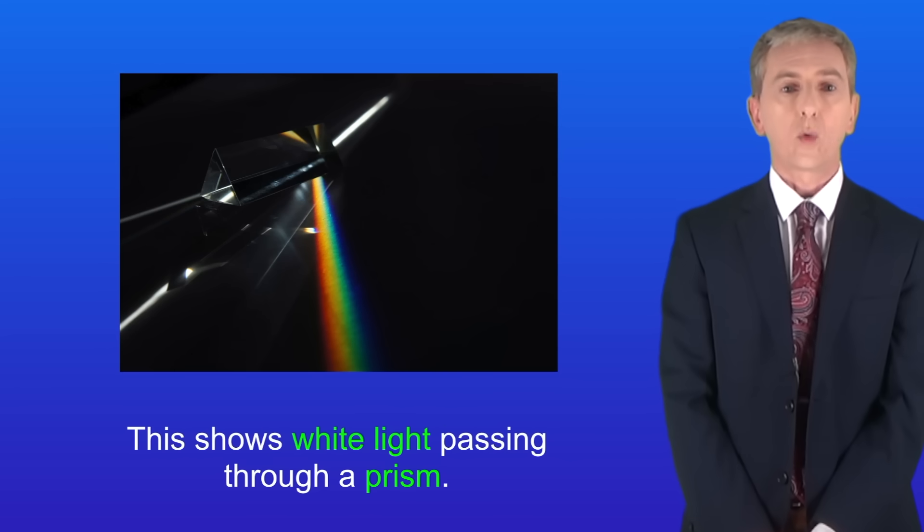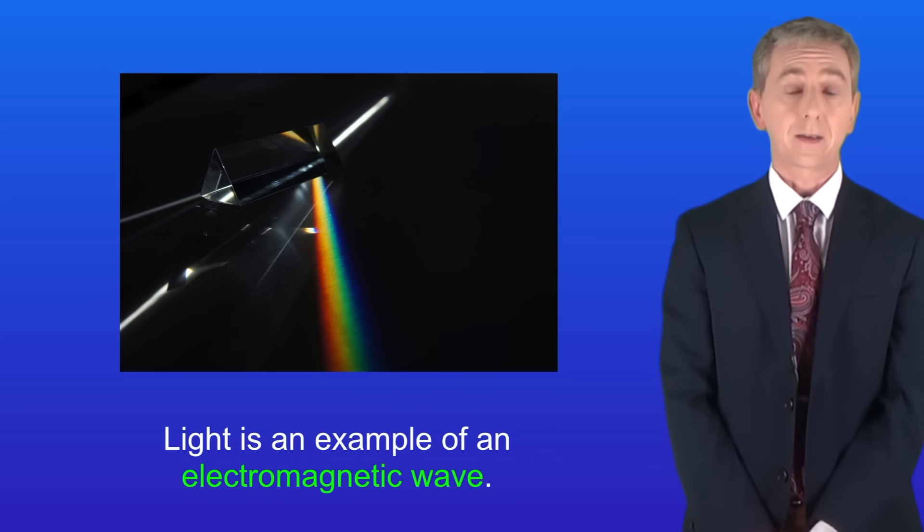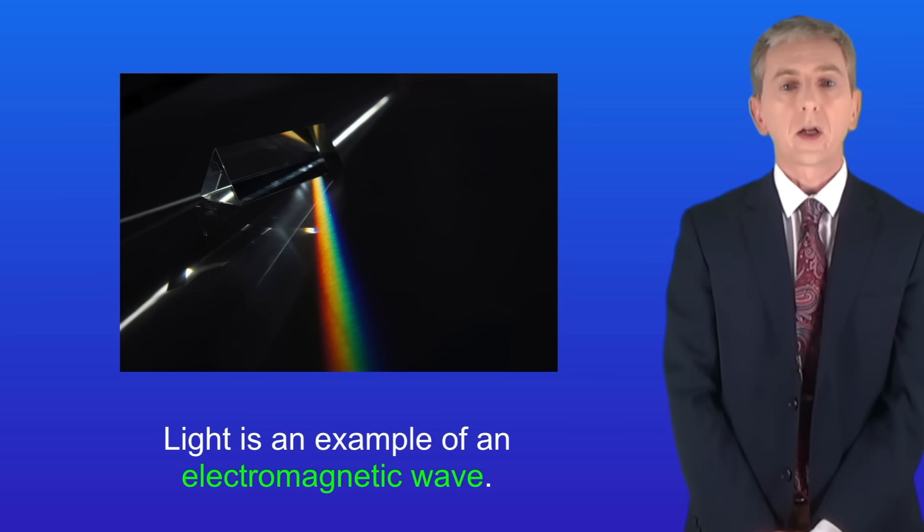Okay I'm showing you here white light passing through a prism. Now light is an example of an electromagnetic wave. So let's start by looking at what's meant by electromagnetic waves.